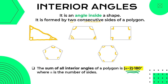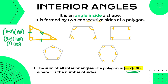Here we have a triangle with three sides. Using the formula (n − 2) × 180 degrees: three minus two is one, times 180, so we get 180 degrees as the sum of all interior angles of a triangle. We can say that angle 1 plus angle 2 plus angle 3 is equal to 180 degrees.